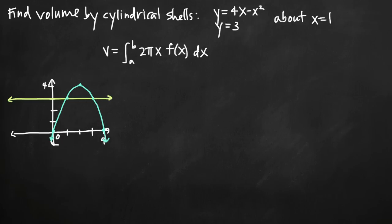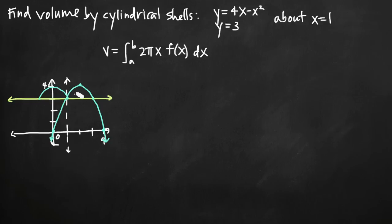Now that we've drawn our region, we can see the area enclosed by the two curves. We're going to revolve it around the line x equals 1, so we sketch that vertical line in. The other side of the figure mirrors across that axis, giving us the volume of revolution. We can draw our approximating cylinder — the chart told us it would be vertical — so it looks like a tall vertical cylindrical shell.